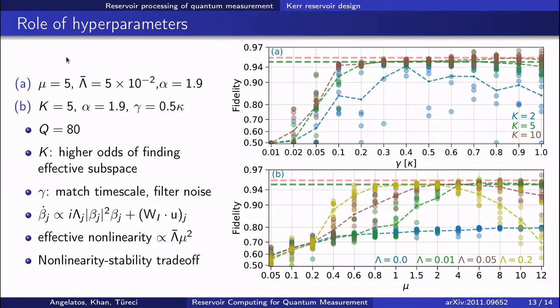Finally, we can use our understanding of the Kerr network dynamics to inform reservoir design through hyperparameter selection. So on this top plot, I show the variation of fidelity amongst 10 random reservoirs with both node number and reservoir timescale.